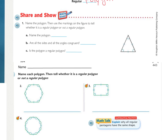Looking at number one, it says to name the polygon, then use the markings to tell whether it is a regular polygon or not. How many sides are there? There are three — 'tri' means three, so that is a triangle. Are all the sides and angles congruent? One tick mark, one tick mark, one tick mark — so the sides are congruent. One arc, one arc, one arc — so the angles are also congruent. Because both the sides and angles are congruent, number one is a regular polygon.